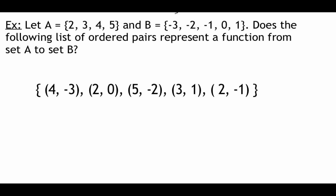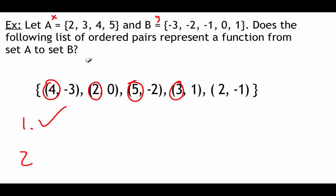Here we're given values in set A and set B and need to figure out if this represents a function. A represents x values, B represents y values. Checking: each x — 2, 3, 4, 5 — is matched with a y, so characteristic one is fine. But checking characteristic two: x value 2 is matched with 0, and also matched with negative 1. That same x value maps to two different y values, so no — this one is not a function.